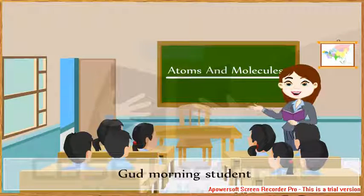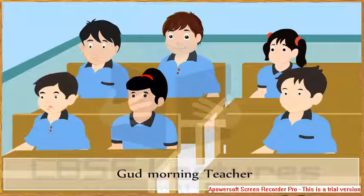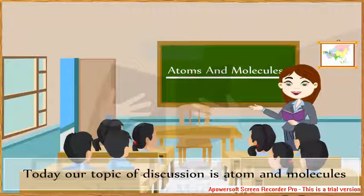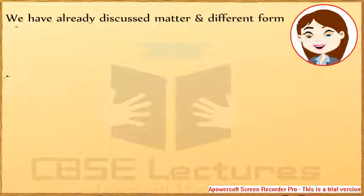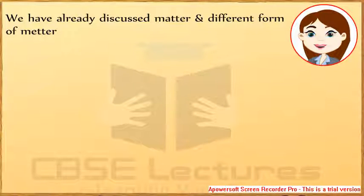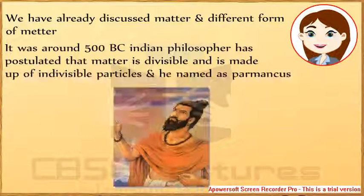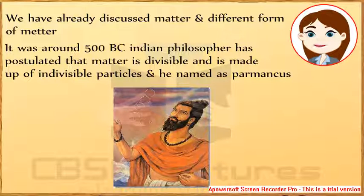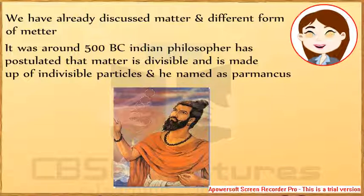Good morning students. Good morning teacher. Today our topic of discussion is atom and molecule. We have already discussed matter and differing forms of matter. It was around 500 BC. Indian philosopher Maharishi Kanad postulated that matter is divisible and is made up of indivisible particles. He named them as Parmanu.